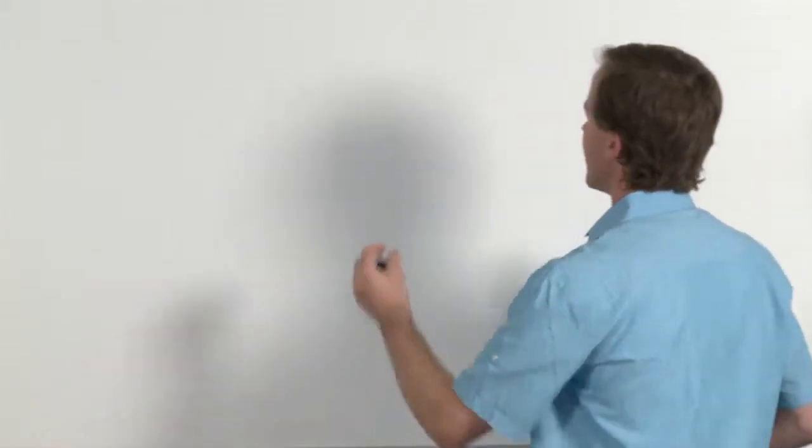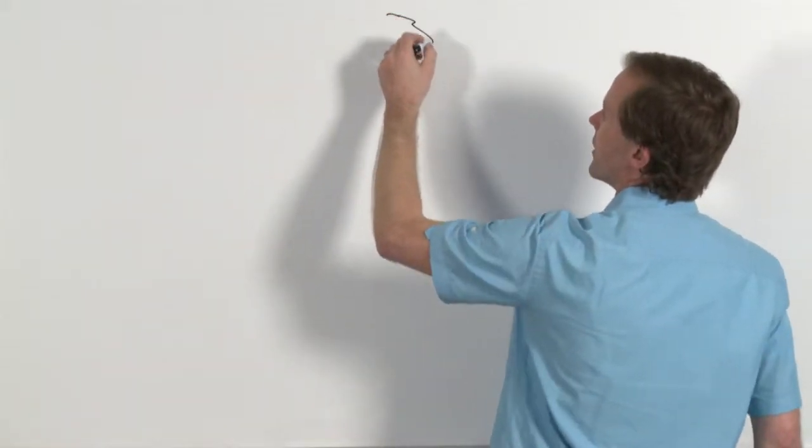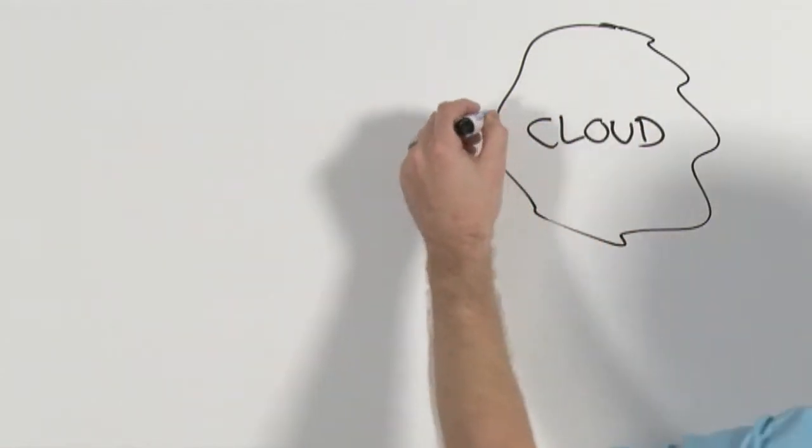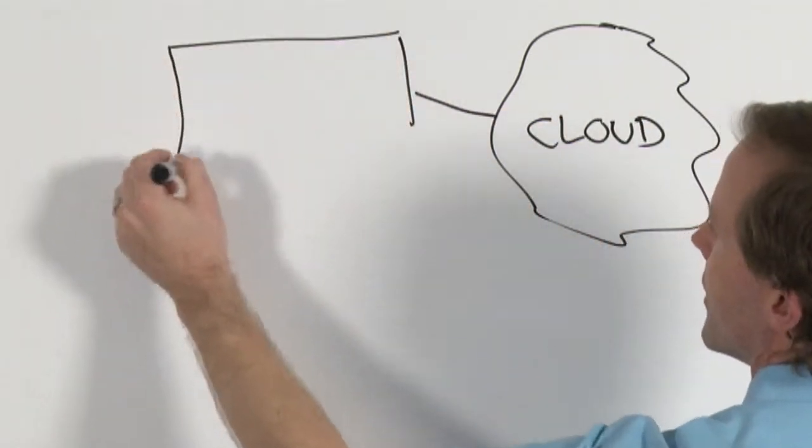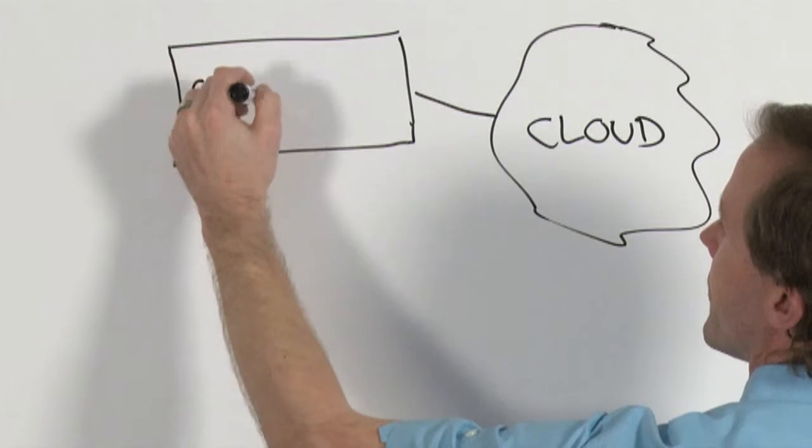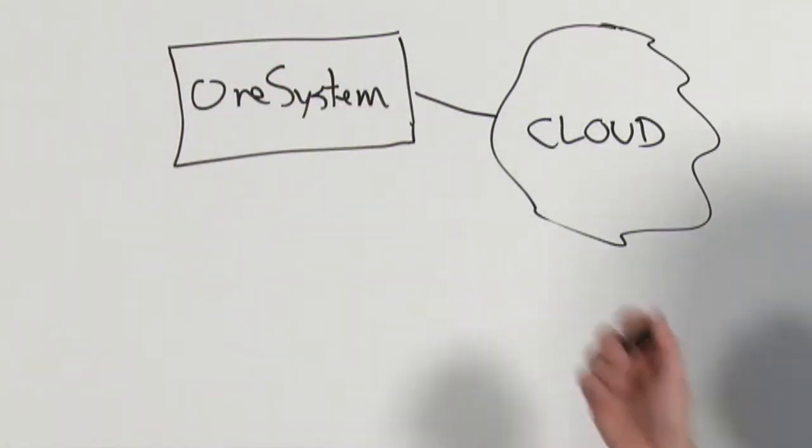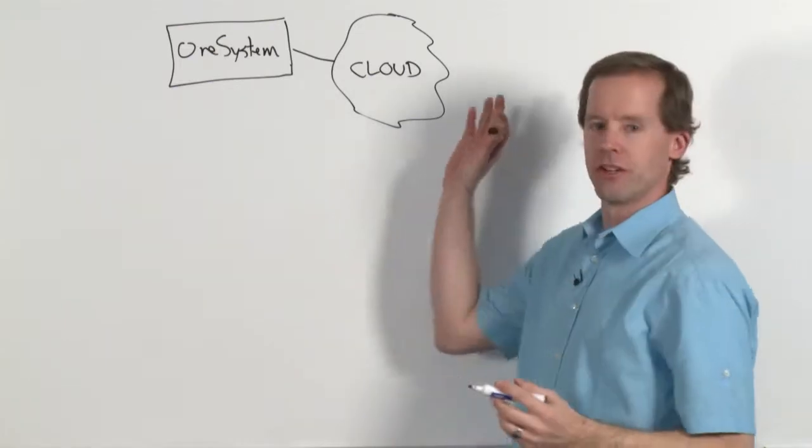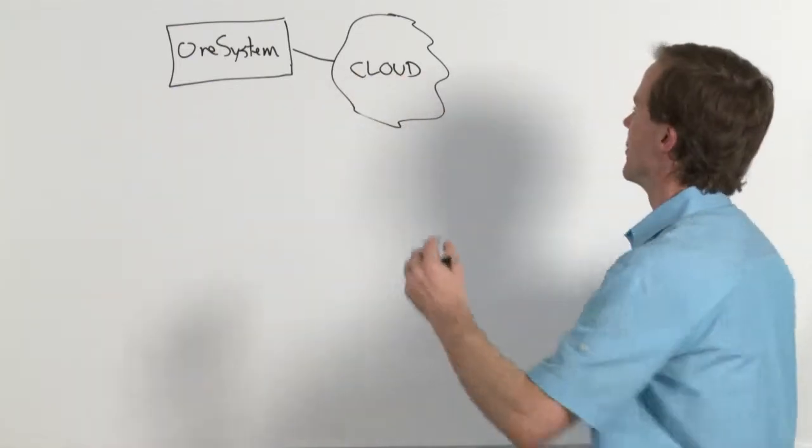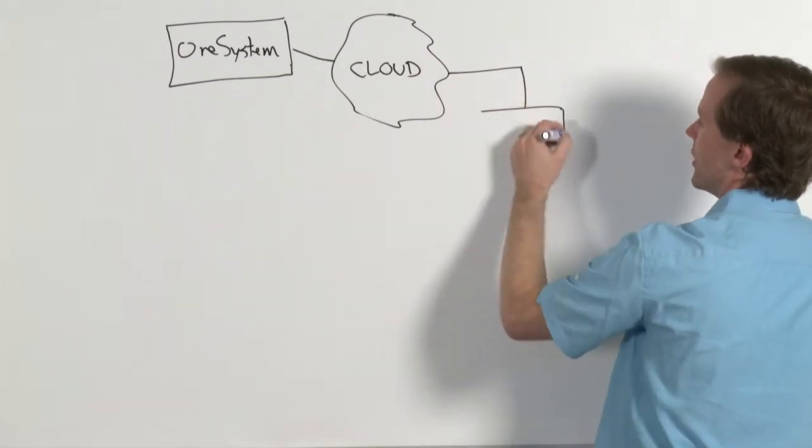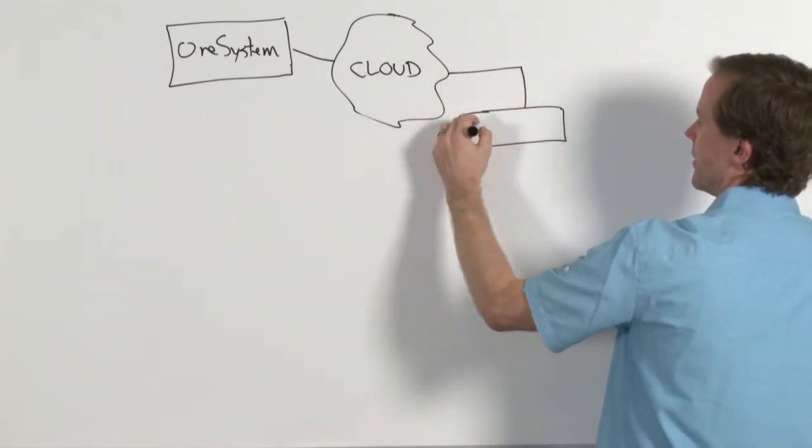To give you a little bit of background, I'm going to draw the cloud. Out in the cloud we have what we call OneSystem. OneSystem is our management system where you manage clusters of OneBlox devices, which is what we call the device that you put on your prem.